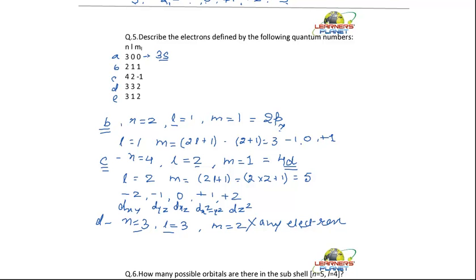That is, L has how many values? L has N minus 1 values. So, here your L is equal to 3. That is, it is not specifying any of the electron.